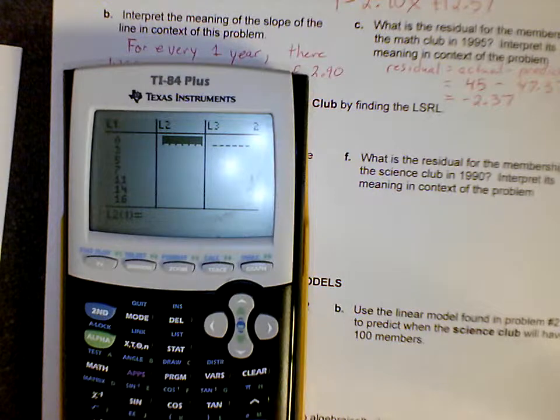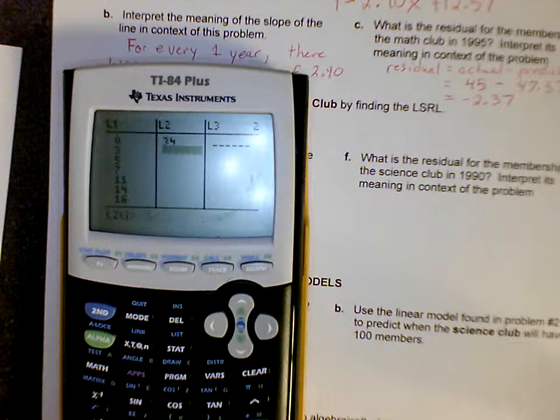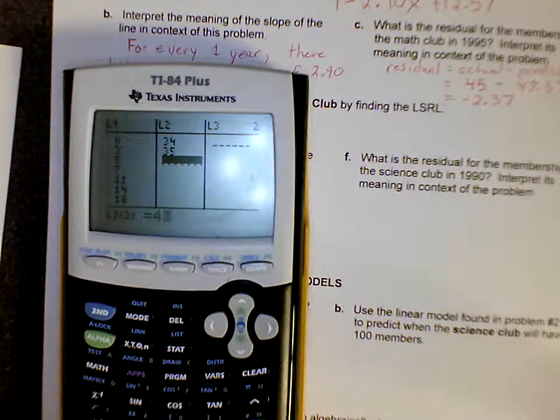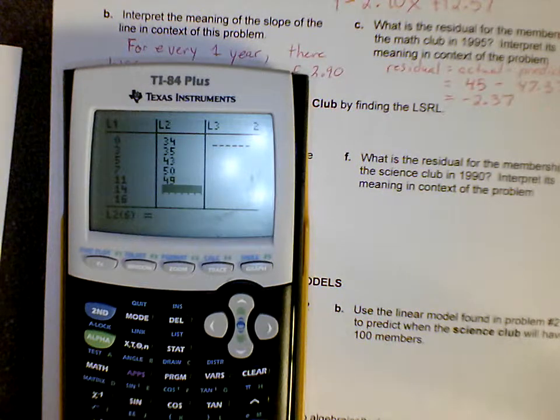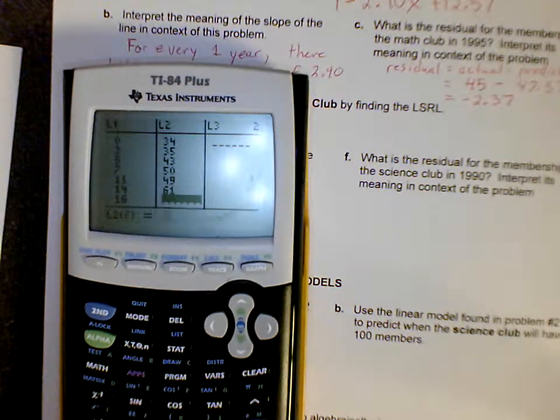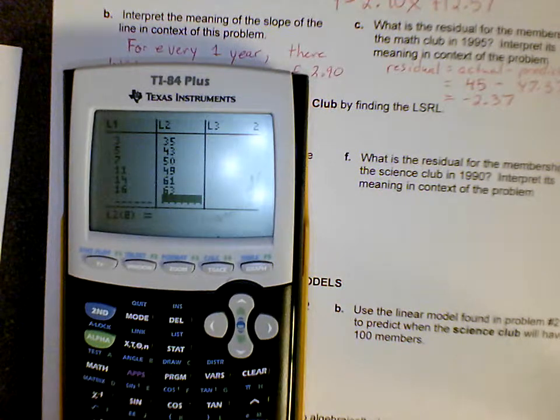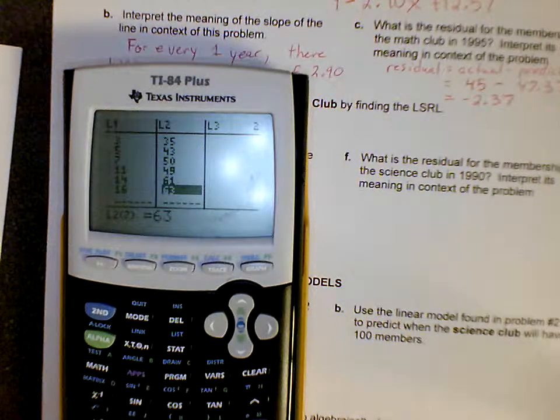And in list 2 we're going to enter our membership values. 34, 35, 43, 50, 49, 61, and 63. And once again we've got 7 values, that's perfect.